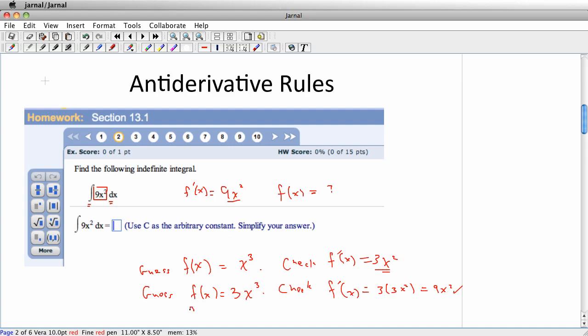Now one thing that will show up in this section right away is the fact that there's going to be more than one correct answer to these. Because if you use f of x equals 3x cubed plus 13, when you check, f prime of x is still going to be 9x squared. Because the derivative of 3x cubed is 9x squared, and the derivative of 13 is 0. So that's also correct.